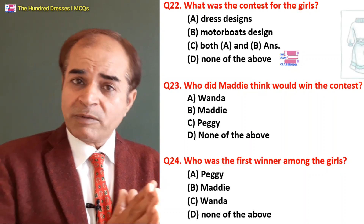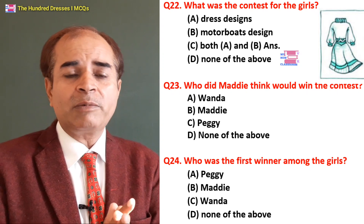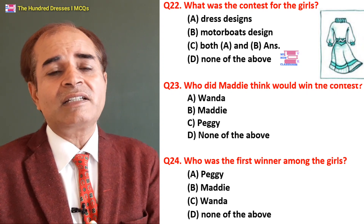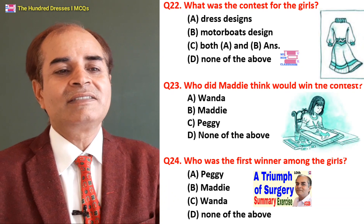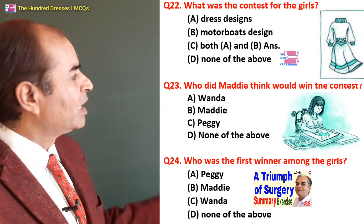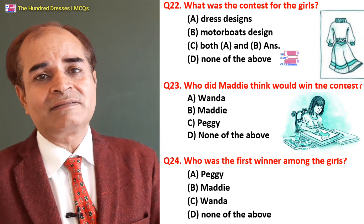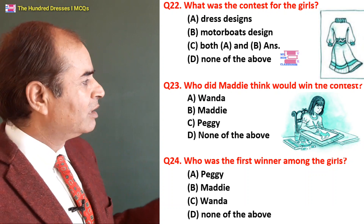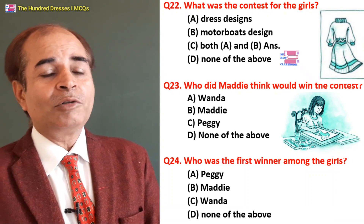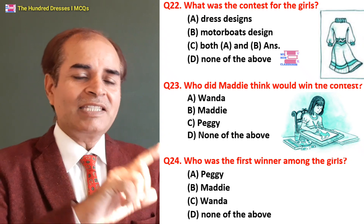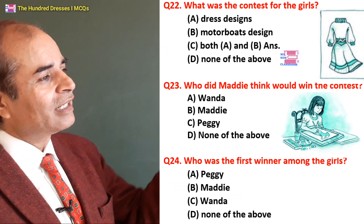Twenty-second question: What was the contest for the girls? Dress designs — yes. Motorboard designs — no, that was for boys. A is the right answer — for girls it was dress designs. Twenty-third question: Who did Maddy think would win the contest? Wenda, Maddy, Peggy, or none of the above? Maddy thought Peggy would win because her drawing was good — but that's not what happened.